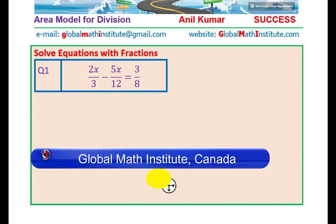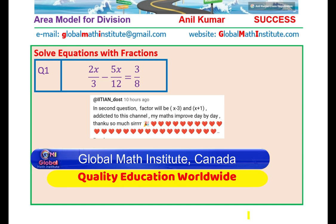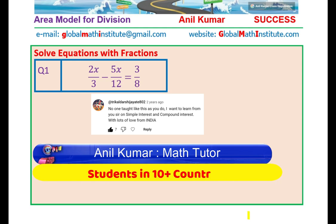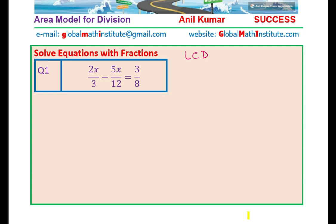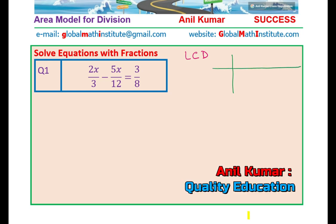The very first question is 2x over 3 minus 5x over 12 equals to 3 over 8. So let us find the lowest common denominator. There are three numbers to work with. The strategy I use is: write down the three numbers, which are 3, 12, and 8.